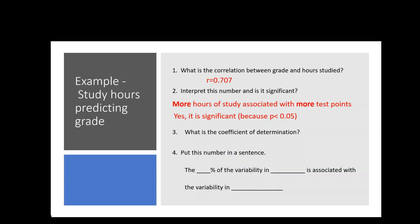So the coefficient of determination, you could calculate yourself. Remember, it's r squared. So that would be 0.707 times 0.707. But fortunately, JASP did the math for us, and they told us that the coefficient of determination is 0.5.